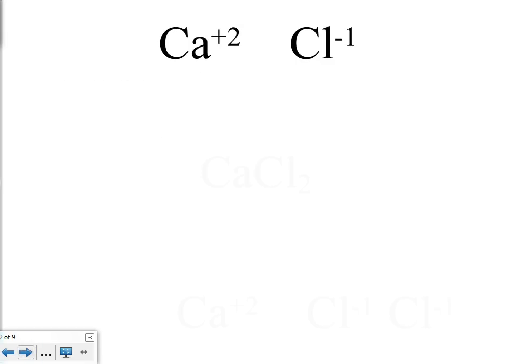If you were given these two ions, notice the cation is written first and the anion is written second. The calcium ion is a plus 2 charge. The chloride ion is a minus 1 charge. If you had one of each, this would not be a neutral compound. So to make it neutral, we're going to need more than one of the anion, because the chloride is only a minus 1. You would need two of the anions to make it neutral.